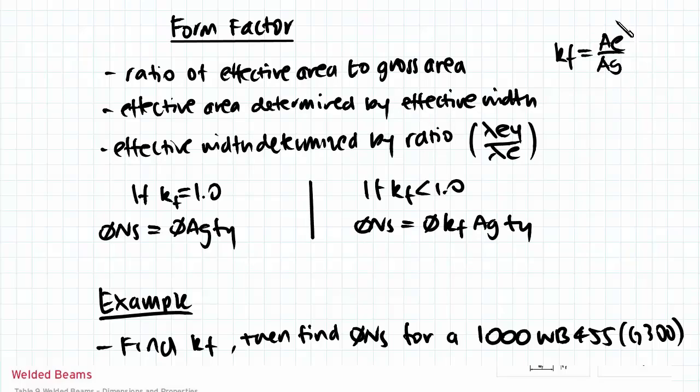The effective area which we need here is actually determined by the effective width of the different plate elements. So Ae equals the sum of be times T, the total effective area of the individual plate elements, where be is the effective width.